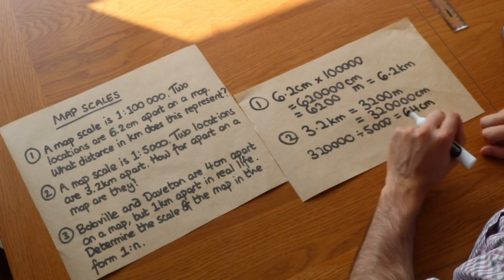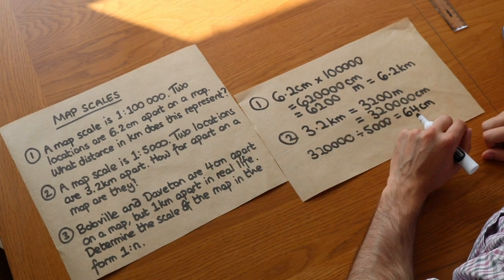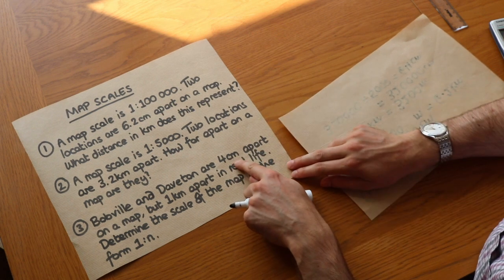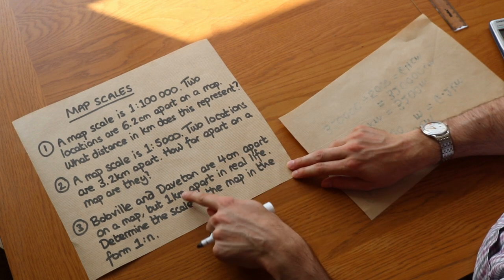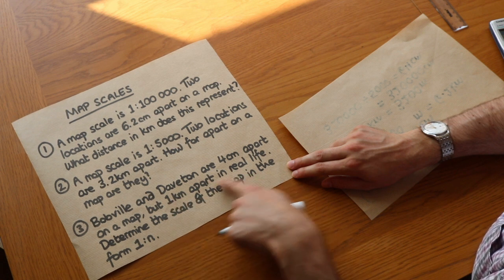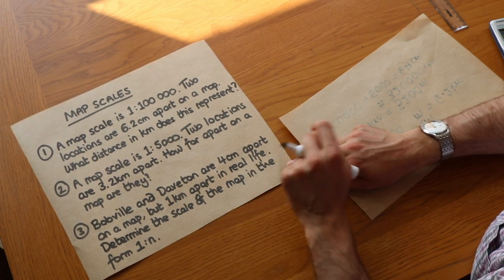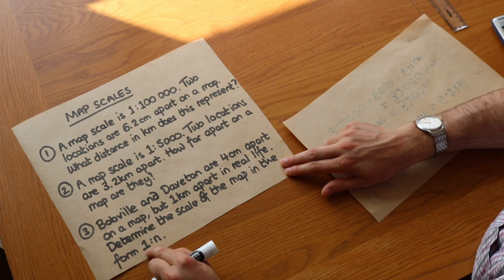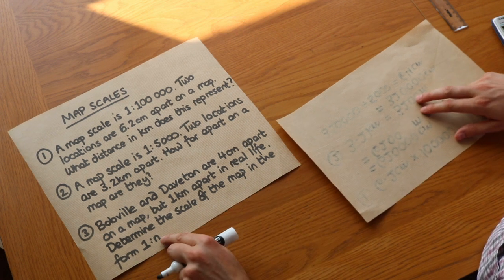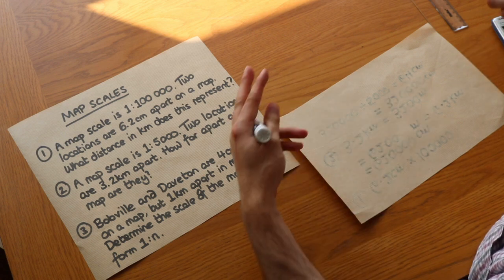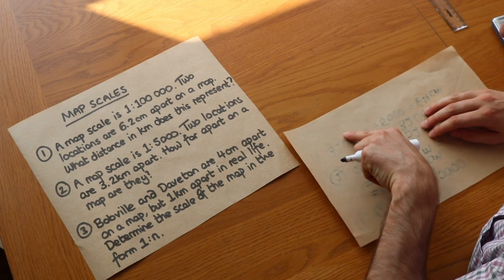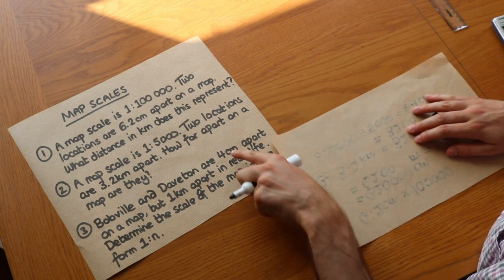Now finally we've got Bobville and Davidon. We're given the distance on the map they're apart and we're given the real life distance they are apart, which is one kilometer, and we want to determine what that ratio is of the map distance to the real life distance. So how many times farther apart are they in real life than on the map?